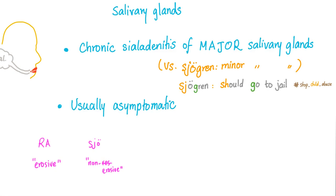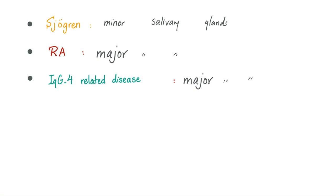A third difference: when rheumatoid affects the major salivary glands, it's usually asymptomatic. But when Sjogren's affects the minor salivary glands, it's usually symptomatic. Sjogren's can of course also affect major salivary glands, but mostly the minor. Note: the lymphoma in Sjogren's affects the parotid, which is a major gland. Here I'm talking about the dry mouth from chronic lymphocytic sialadenitis — that's minor salivary glands, most of the time.